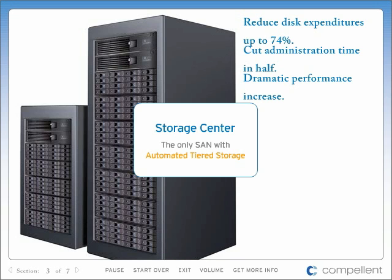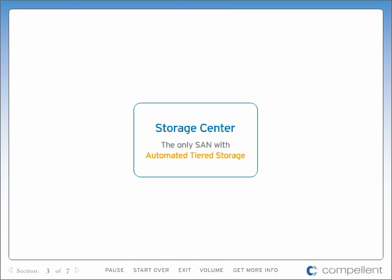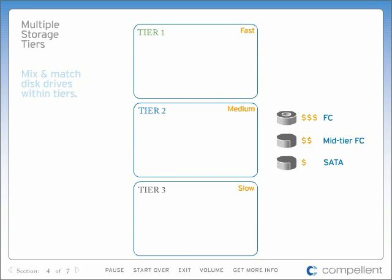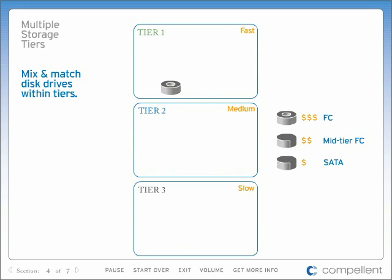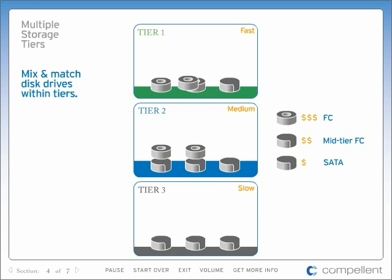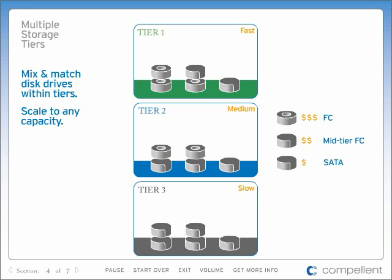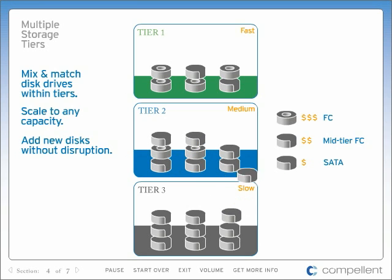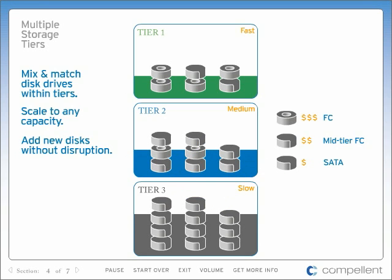How does Storage Center do this? The secret is in its ability to automatically migrate data across multiple storage tiers. Compellent's modular architecture allows you to mix and match disk drives within tiers. You create the right blend of performance and cost, then scale those tiers to any capacity. Unlike any other SAN, Compellent can change or add new disk technology without disruption.